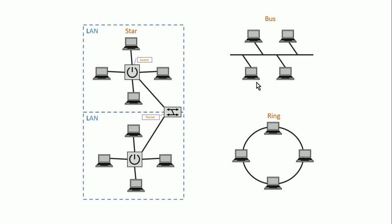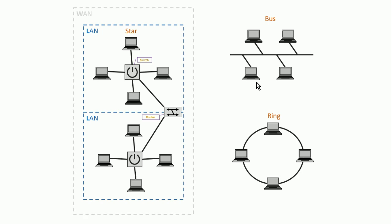Anytime we have a collection of computers connected to a switch, we call that a LAN — a Local Area Network. The little network you have at home connecting your cell phone, laptop, or tablet is a local area network. Multiple LANs interconnected to one another would generically be called a WAN — a Wide Area Network.